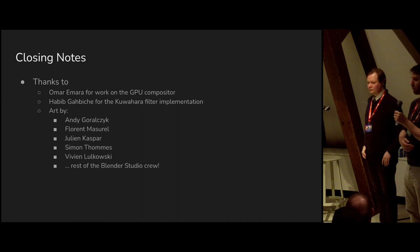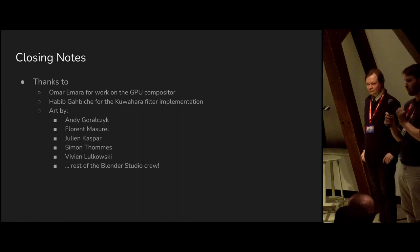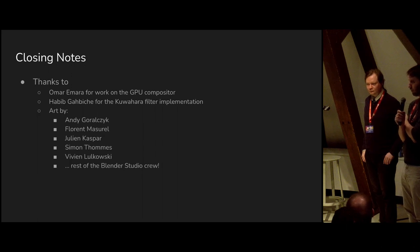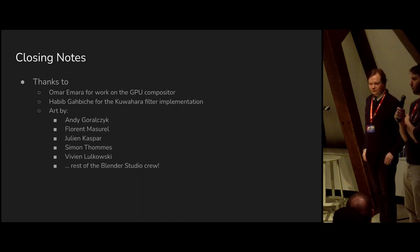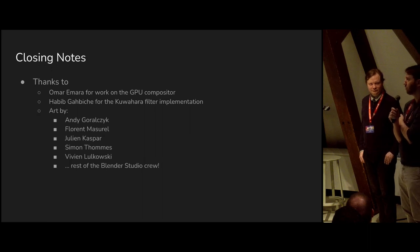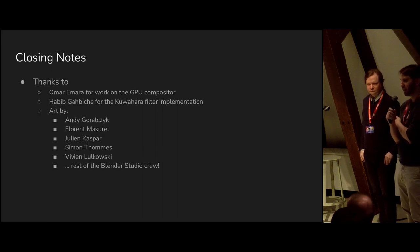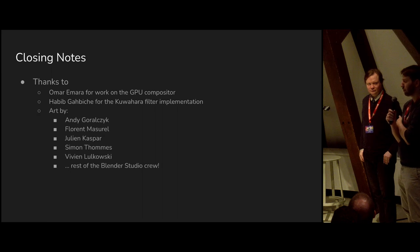An audience member asked about better implementation of volume objects in Cycles — such as cryptomatte passes or Z-depth. The speakers acknowledged having thoughts and many issues logged, but it's unclear whether it will become a priority in the context of this project. It might turn out during compositing work that it's not good enough and needs improving. It's on the list but not the immediate list.